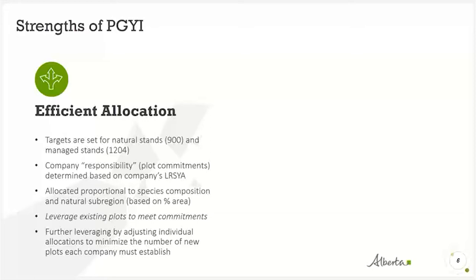A key strength of PIGGIE is efficient allocation. When PIGGIE was set up, a target was set of 900 PSPs for natural stands and 1,204 PSPs for managed stands. Each company was assigned a responsibility for the number of plots to contribute, determined based on their long-run sustained yield average — a company in a higher LRSY class would be responsible for contributing more plots — creating equity between contributors.